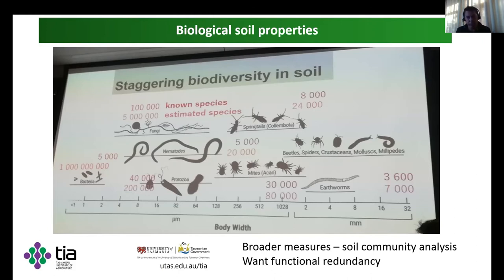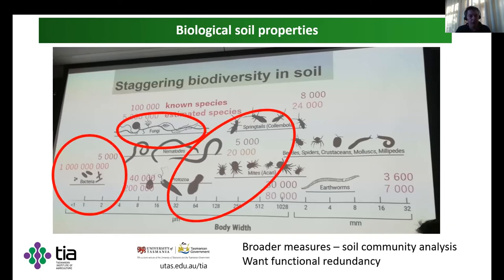From a cover crop perspective, we've measured physical and chemical parameters, but perhaps the greatest interest is in some of the biological parameters that have come out of these. When we do a field day, most of the questions that come back relate to: how does the biology change? What's happening to the biology on the site when we utilise a cover crop? We can look at soil communities and different communities that might give us an indication as to how the soil is tracking and performing. With that, I'll hand over to Shane.